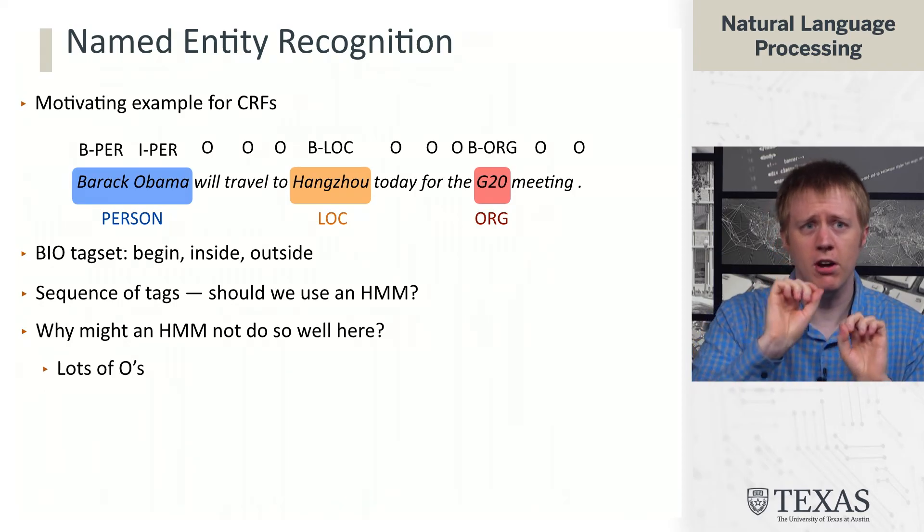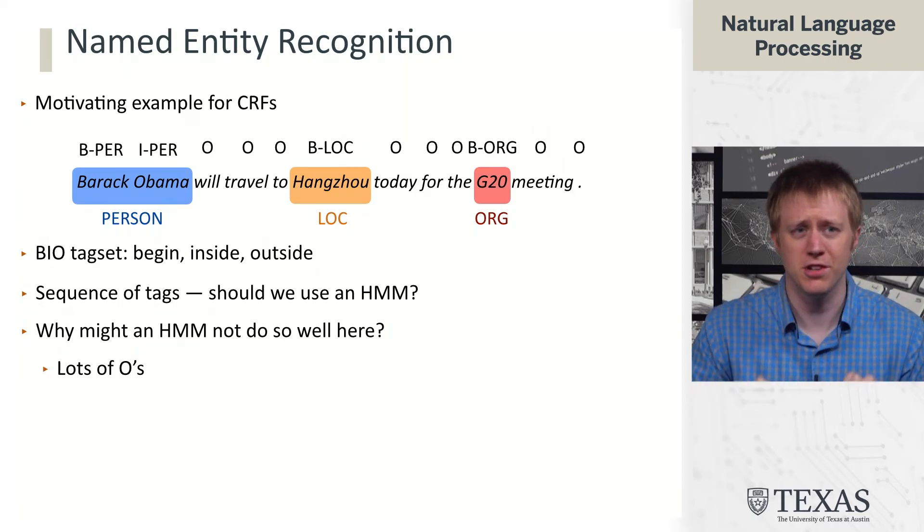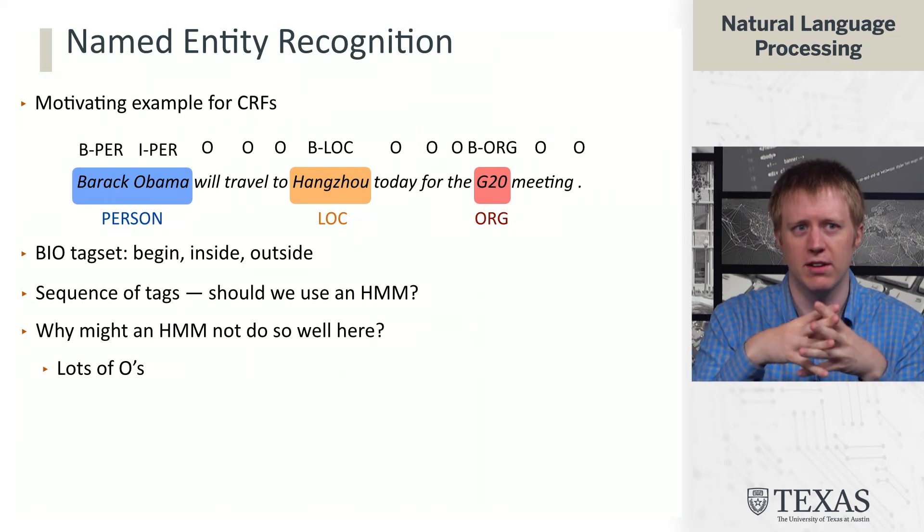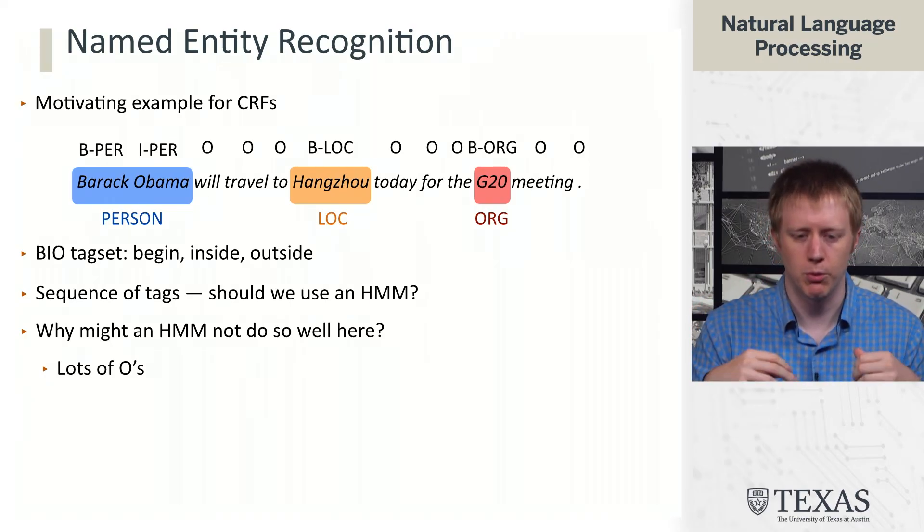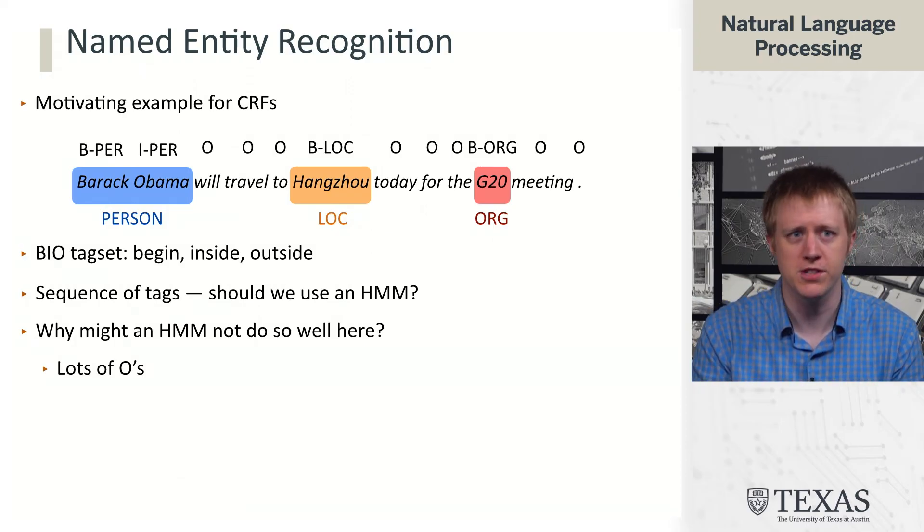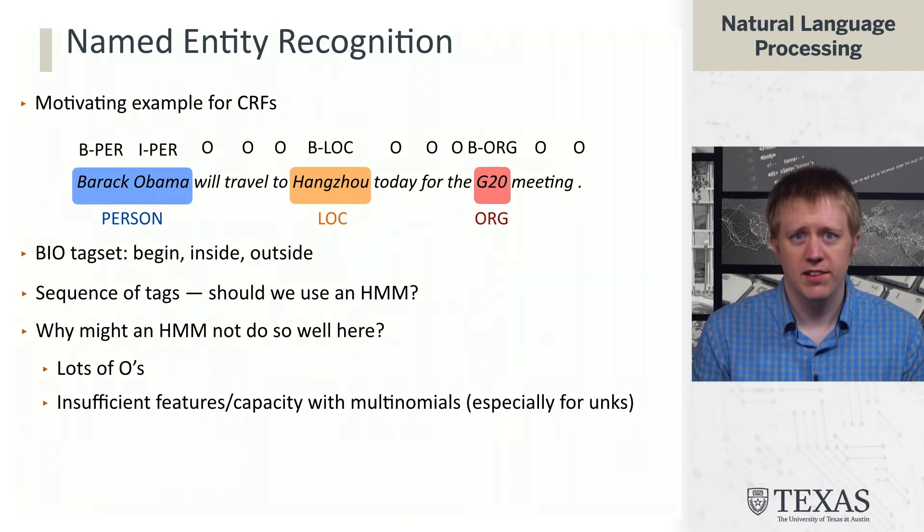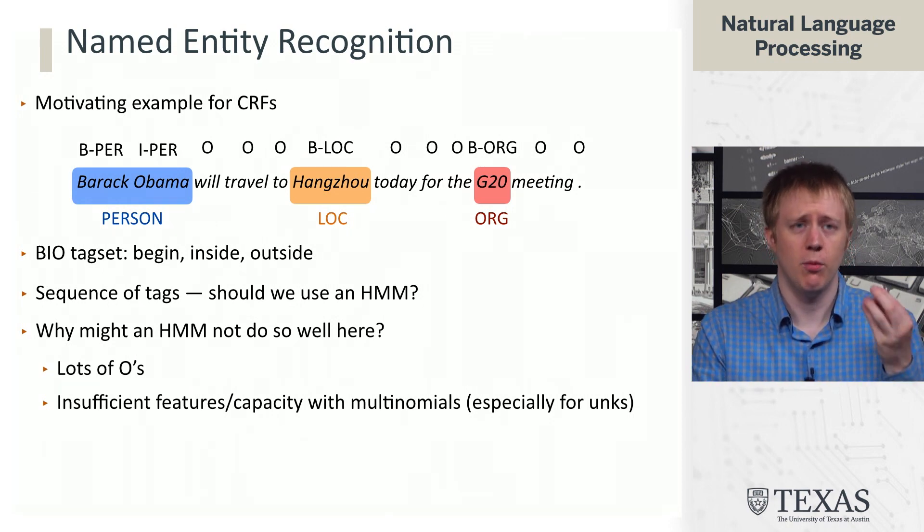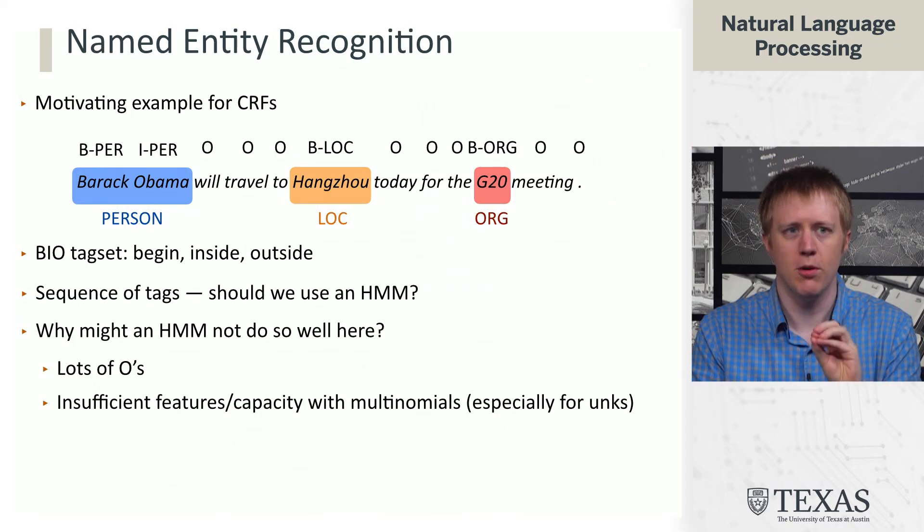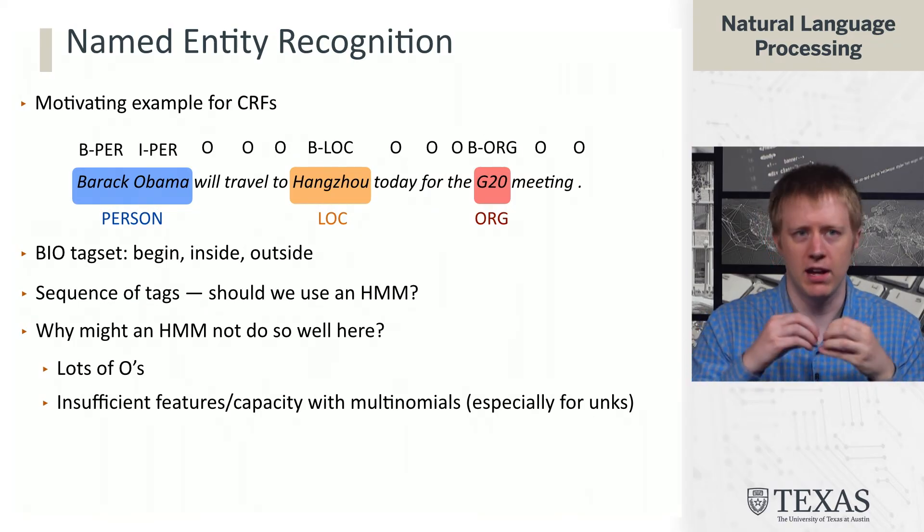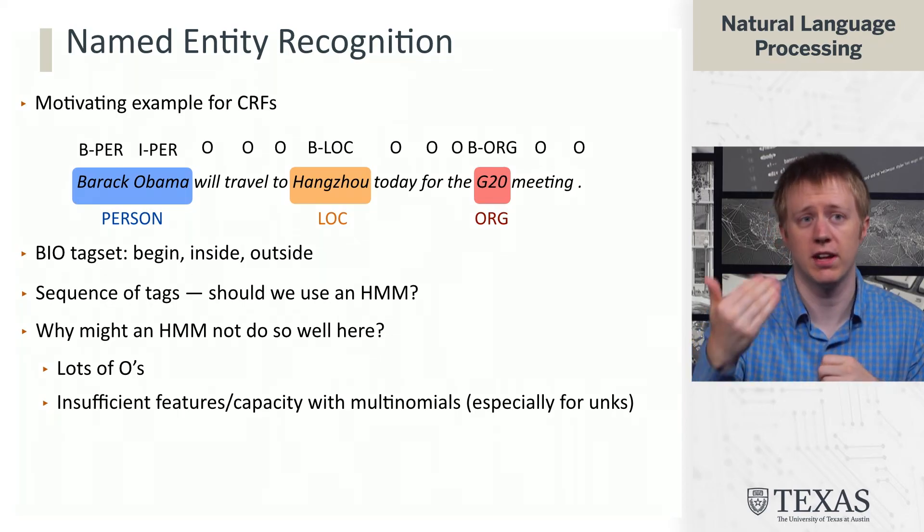And when you have O's, we're not moving information around and the words aren't kind of influencing each other to the extent that they are when we have all these fine-grained part-of-speech tags like present tense verb. And the second problem is that the way we defined our HMMs was using these multinomial distributions over transitions and emissions. We just basically said, what's the probability of this word given this tag?